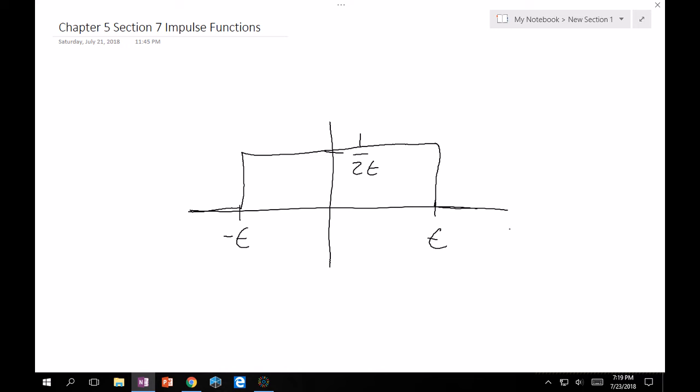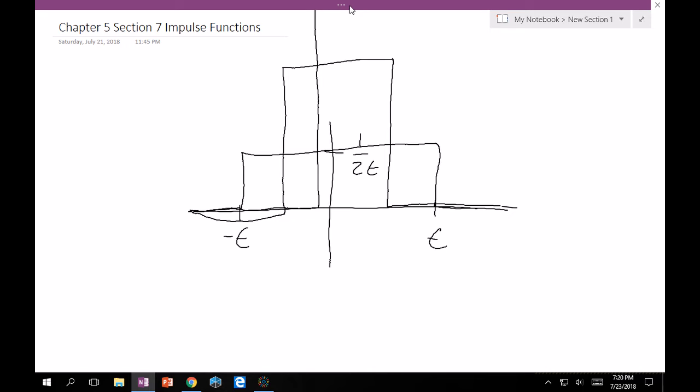Now, what happens if we start shrinking epsilon? Well, probably something like this. 1 over 2 epsilon would increase because it's inversely proportional to epsilon. And so if we keep going, if we get very dangerously close, then it even goes off the screen.